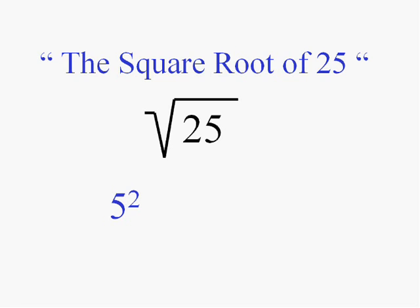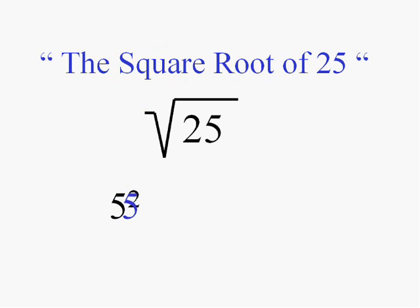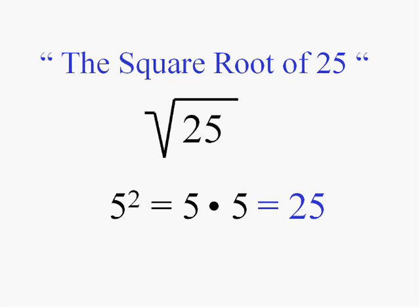5 squared is 5 times 5, which is 25. So 5 is the number you would square to get 25. Therefore, 5 is the square root of 25.